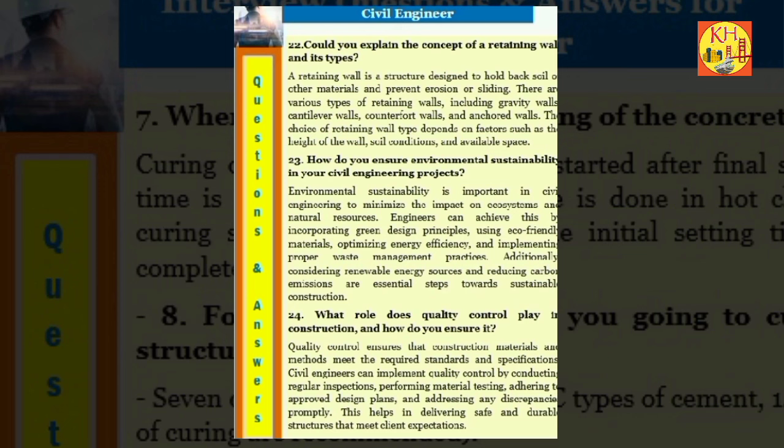Question 23: How do you ensure environmental sustainability in your civil engineering projects? Environmental sustainability is important in civil engineering to minimize the impact on ecosystems and natural resources. Engineers can achieve this by incorporating green design principles, using eco-friendly materials, optimizing energy efficiency, and implementing proper waste management practices. Additionally, considering renewable energy sources and reducing carbon emissions are essential steps towards sustainable construction.